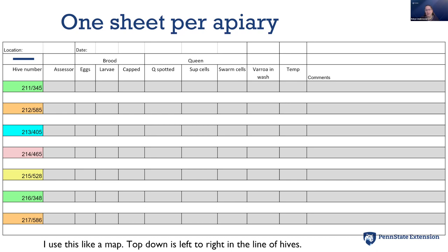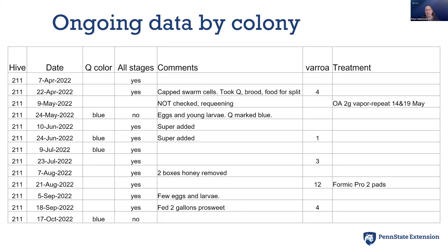There's an area for comments — anything like you fed today, added a super, took honey, saw a disease, anything you want. So this is what I use in the field: write on paper, take a picture before I leave. When I get home, I transfer that to a digital spreadsheet using Google Docs, partly because I can access it on my phone or print it out and bring it with me. It's really important to be able to look at a date and see what I did the last time I was in there before I open it.